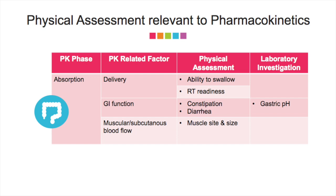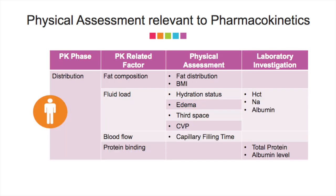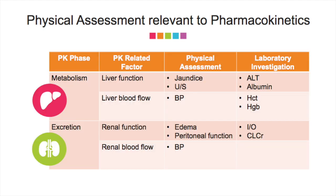Physical assessment can also support pharmacokinetic monitoring of selected medications. For example, the ability to swallow may help the pharmacist choose the best dosage form for the patient. If the patient has high central venous pressure (CVP) and edema of the lower limbs, these may indicate fluid overload and a higher volume of distribution. Edema may also signify a renal excretion issue.